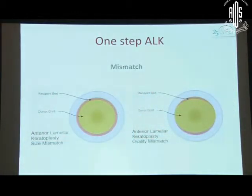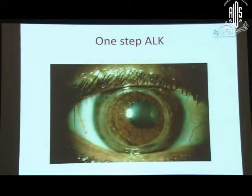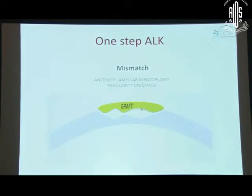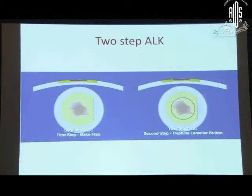The problems with these kinds of ALK are that even though you use the same microkeratome or ALK machine to make your donor as well as your host bed, you can have mismatch between the recipient bed and the donor bed. In addition, you can also have a mismatch in the irregularity of the bottom of the graft that you harvest and a mismatch in the thickness of the graft. Because of this, a one-step ALK probably may not be such a great procedure to treat anterior lamellar pathology.